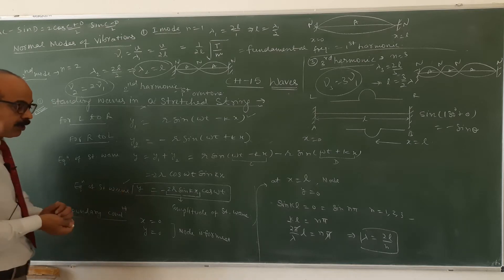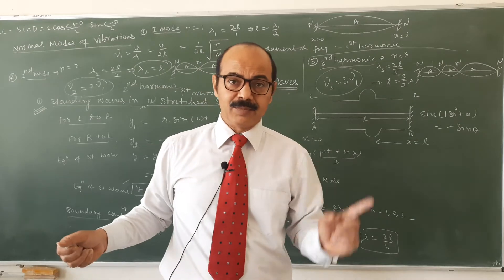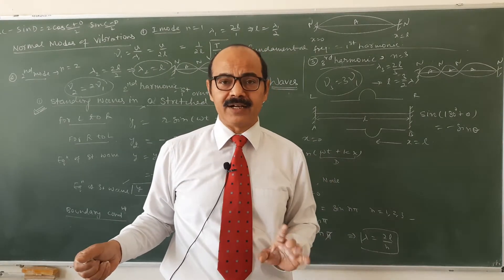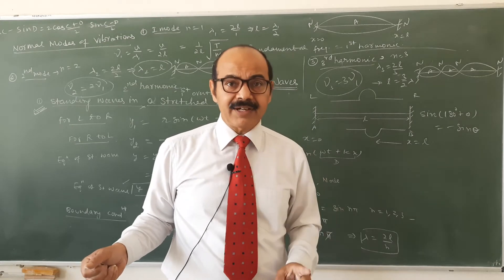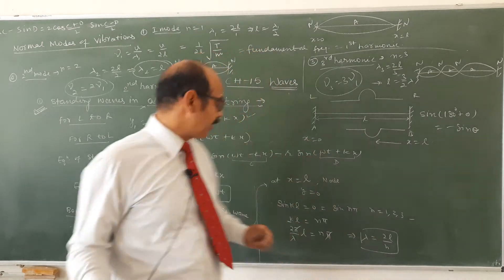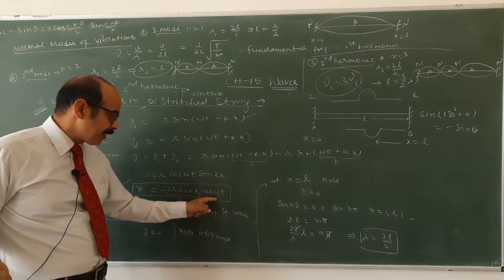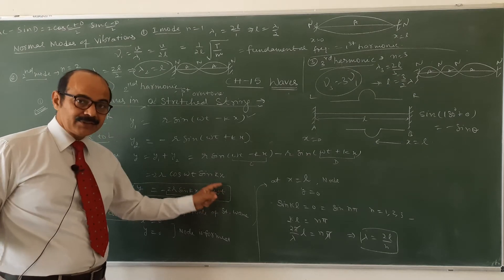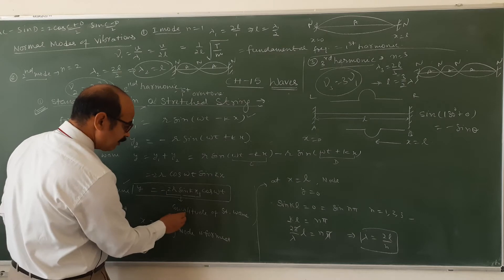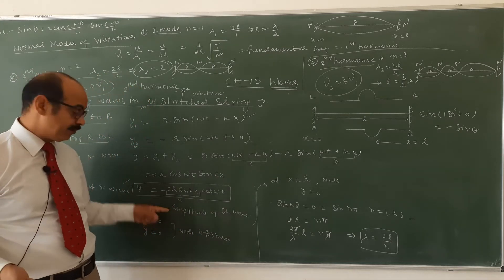आपको यह ध्यान रखना है कि traveling wave का equation r sin(ωt − kx) होता है — single sine आएगा. Standing wave का equation, दो traveling waves को superimpose करने के बाद जो equation बनेगा, उसमें sine और cosine दोनों होंगे. और जो t वाली term है — cos(ωt) या sin(ωt) — उसको छोड़कर जो बाकी सब कुछ बचेगा, that will be the amplitude of the standing wave.